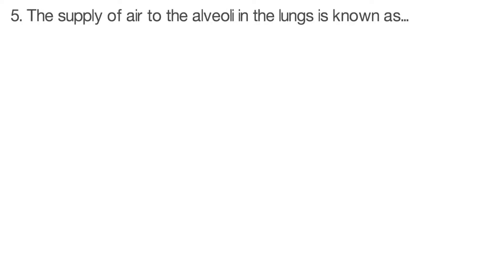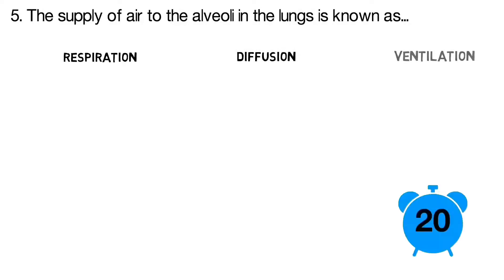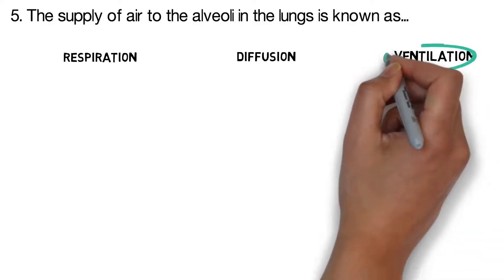Question number five: the supply of air to the alveoli in the lungs is known as? Is it respiration, diffusion, or ventilation? The correct answer is ventilation.